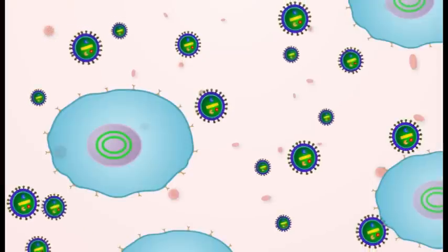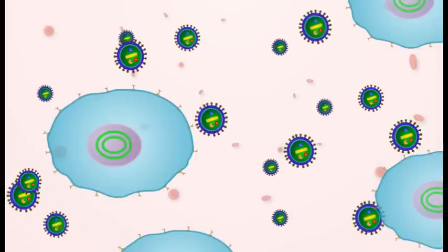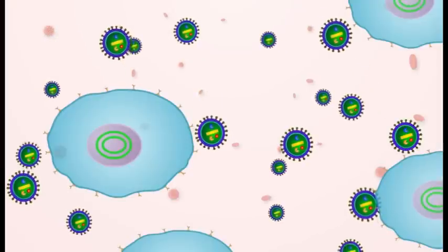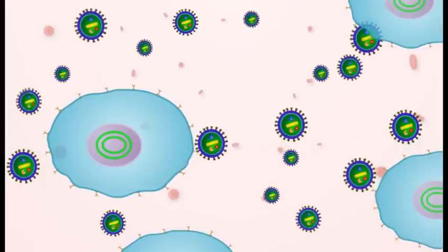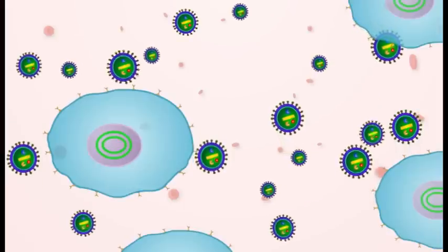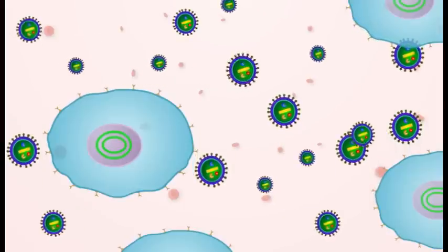The viral levels at this time are very high because at first, the body is unable to fight the virus. During this time, the HIV antibody test is negative. This is called the window period.